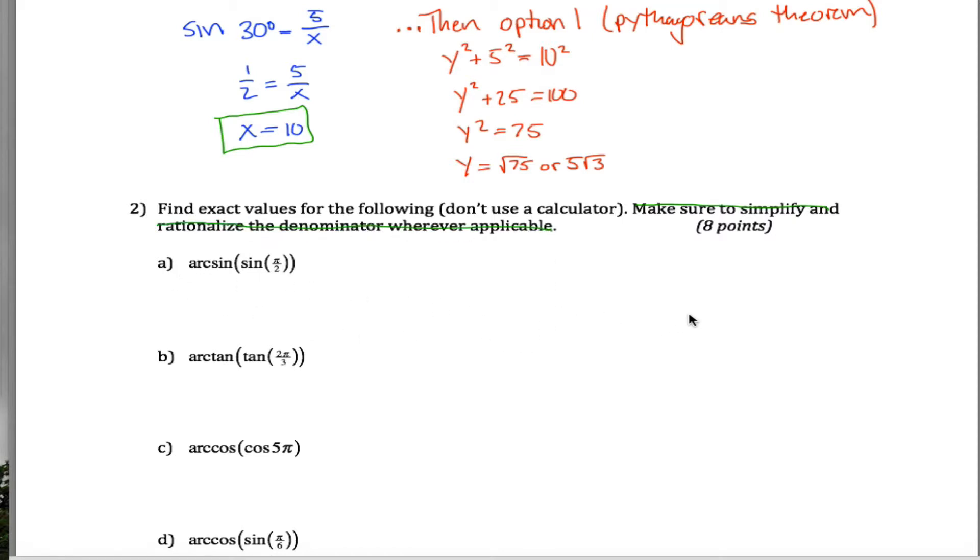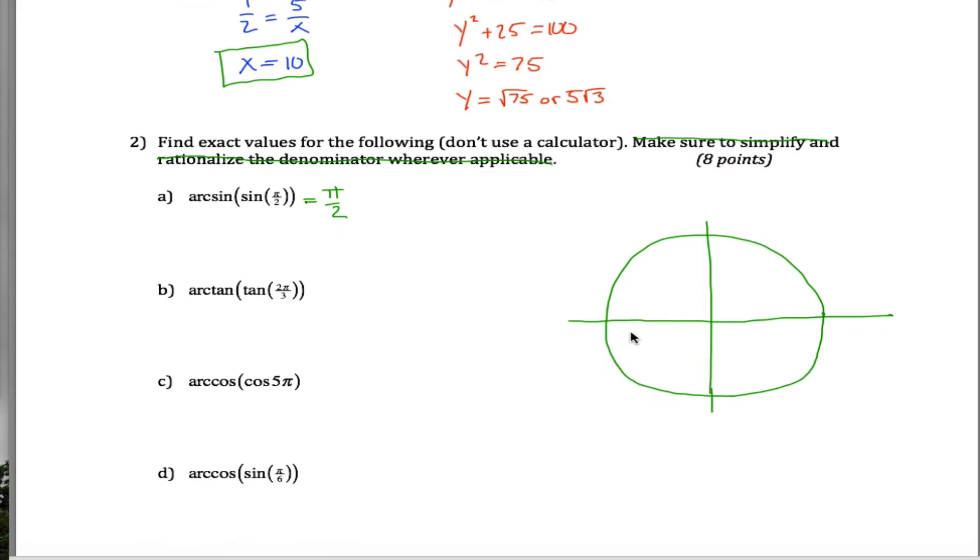The arc sine of sine of pi over 2. Well, it turns out that this answer is just pi over 2. And the reason it is just pi over 2 comes from our unit circle. When we're dealing with arc sine, what we do is we restrict the domain of our sine function. The sine function is restricted to only take on values from negative pi over 2 up to pi over 2. So this is the range of arc sine.